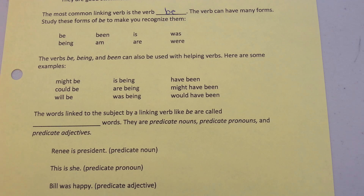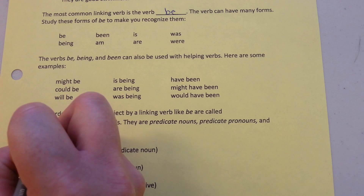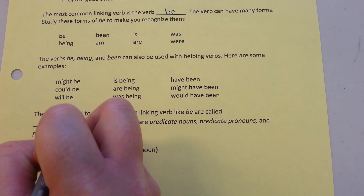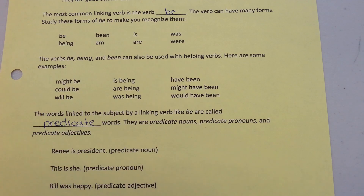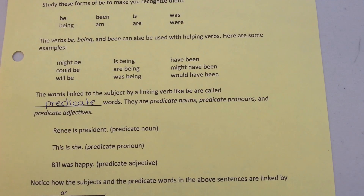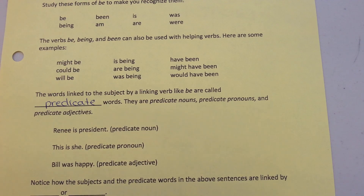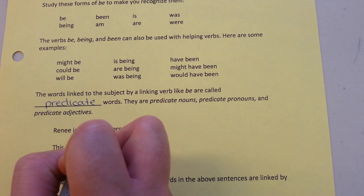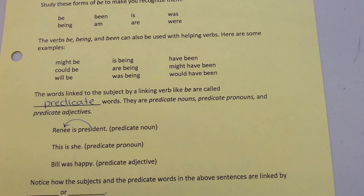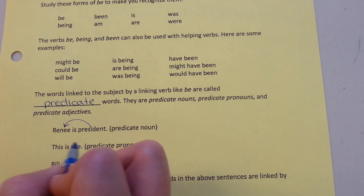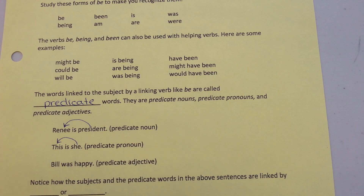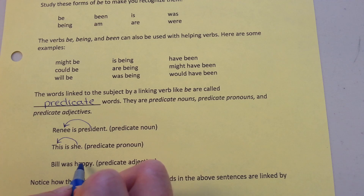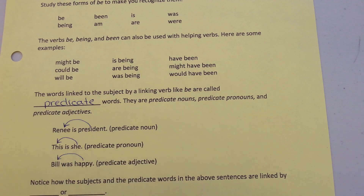The words linked to the subject by a linking verb are called predicate words. They are predicate nouns, predicate pronouns, and predicate adjectives. Here are some examples: "Renee is the president" — a predicate noun. "This is she" — a predicate pronoun. "Bill was happy" — a predicate adjective.